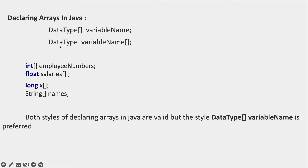The style used in other languages like C and C++ is data type followed by variable name followed by square bracket. In Java also we use this format. However, the preferred approach in Java is data type followed by square brackets followed by variable name.